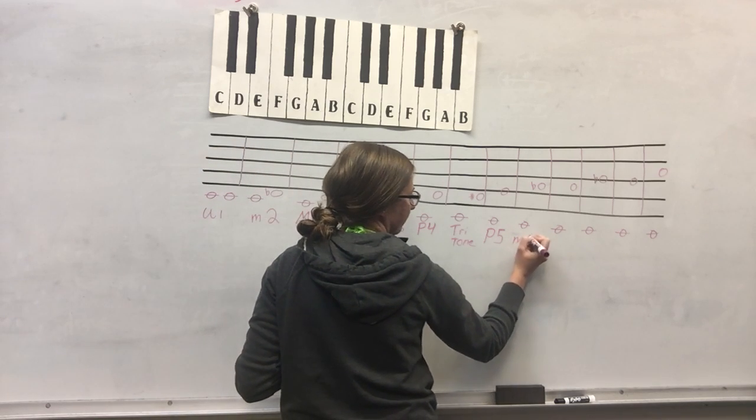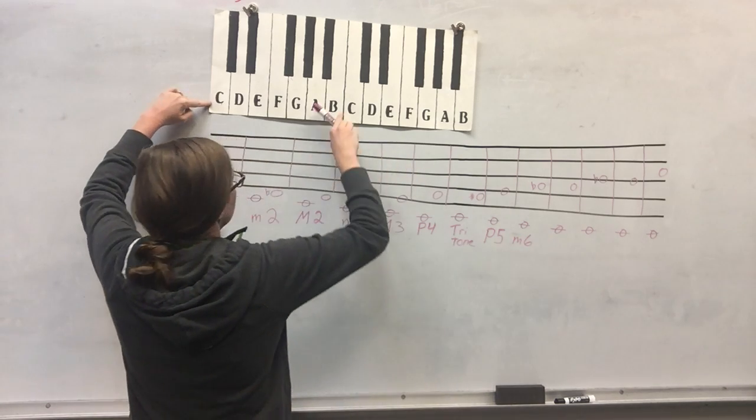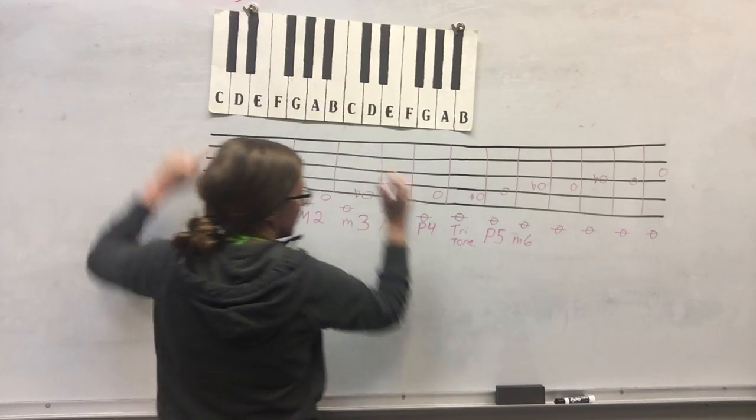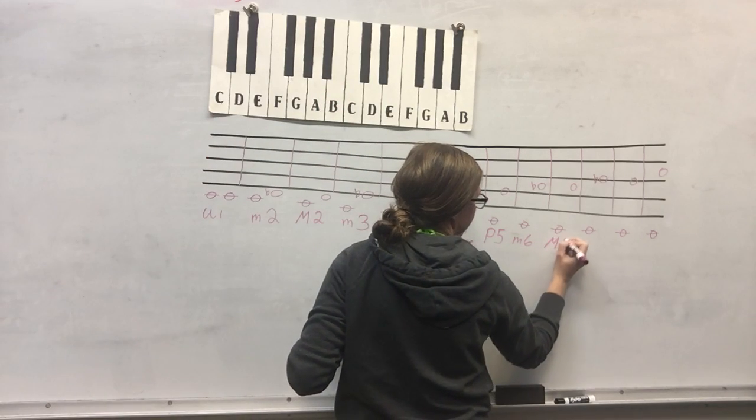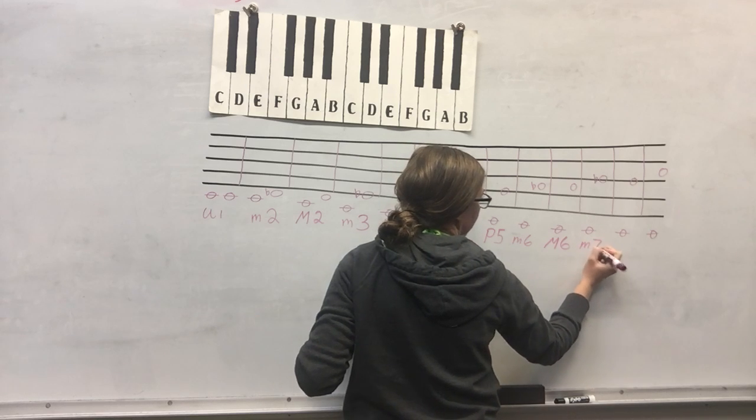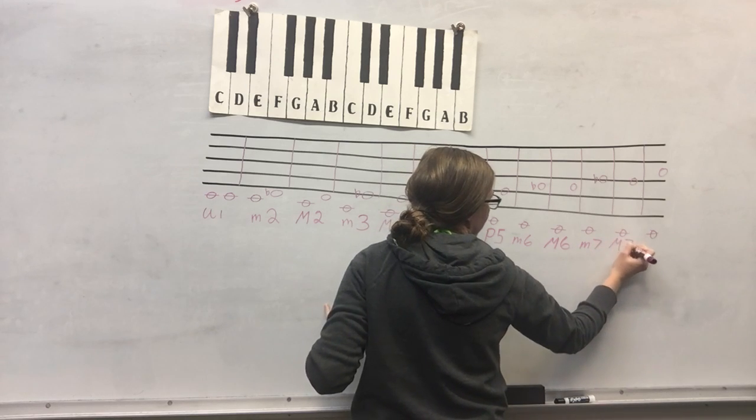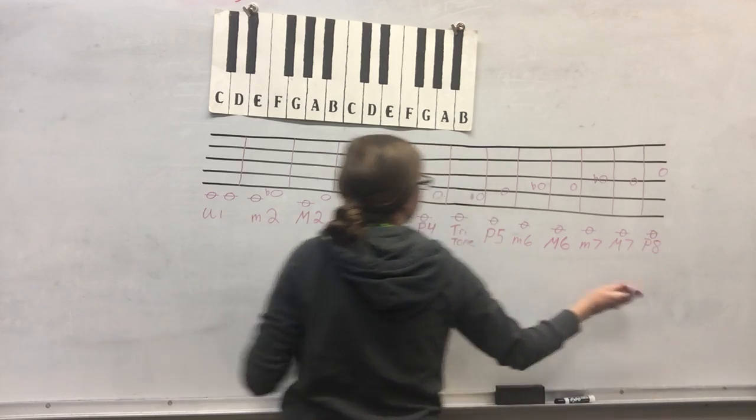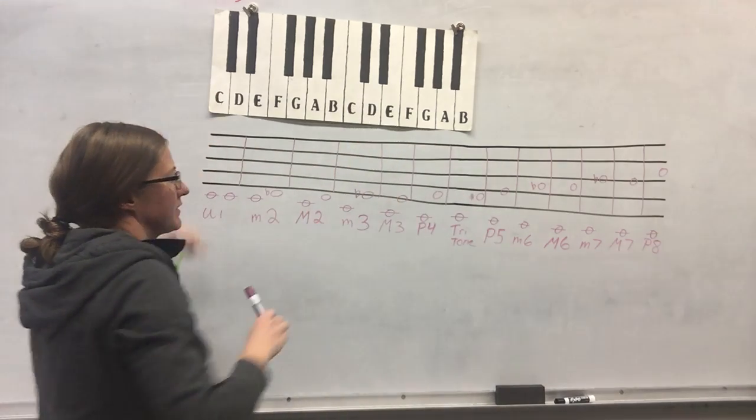After fifth we're going to have the minor sixth from C to A flat, so C to A is my major sixth. Then I'll have my minor seventh to B flat, major seventh to B, and my perfect octave from C to C, being the same note.